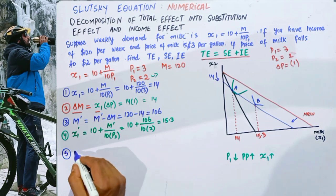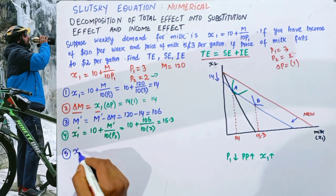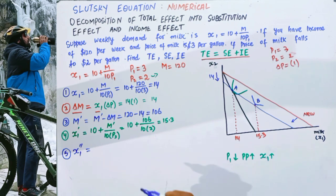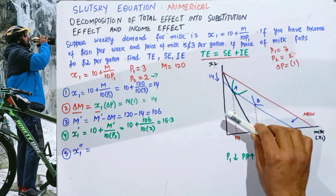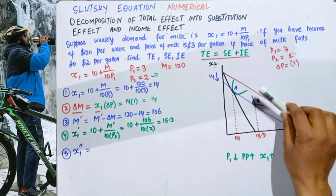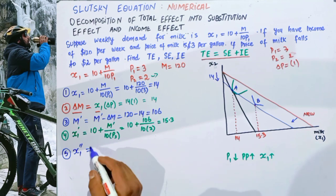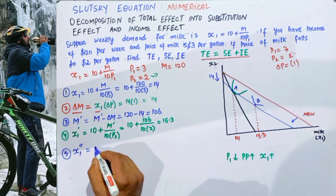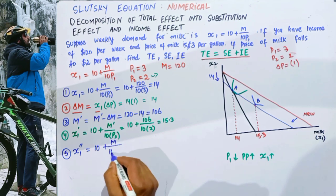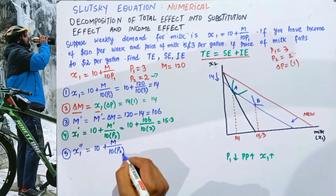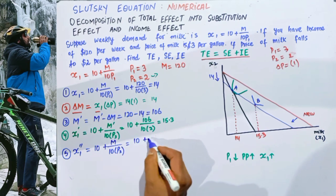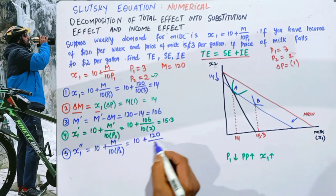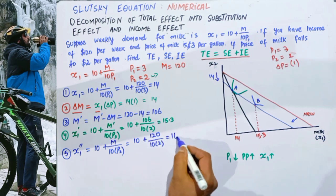The fifth step is to find the quantity demanded at old income and new price — that is, we release the income we previously took away. Using the demand function: x1'' = 10 + 120 / (10 × 2) = 16. So when we restore the original income at the new price, the quantity demanded is 16 gallons.